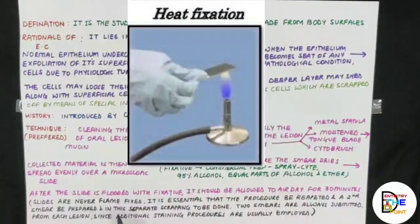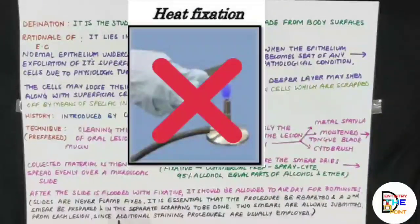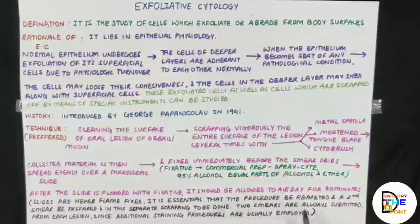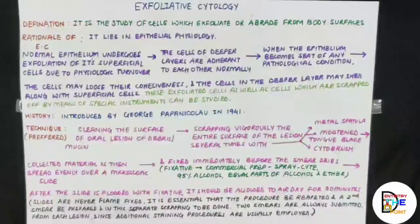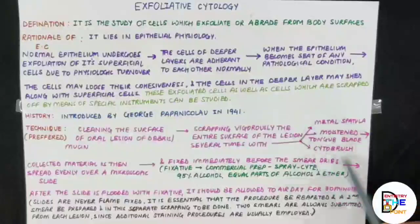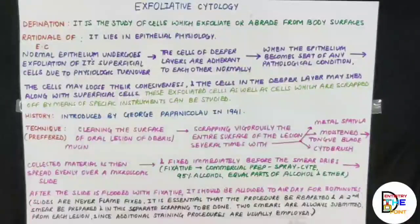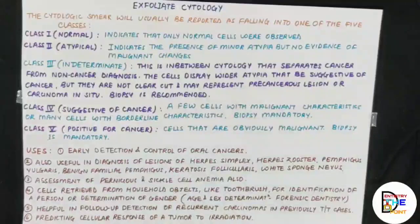These slides are never flame-fixed — unlike bacteriological slides which are dried over a flame. It is essential that the procedure be repeated and a second smear be prepared, meaning a duplicate slide must be made with a separate scraping using a new spatula, cytobrush, or tongue blade. Two smears are always submitted from each lesion since additional staining procedures are usually employed by the cytologist.